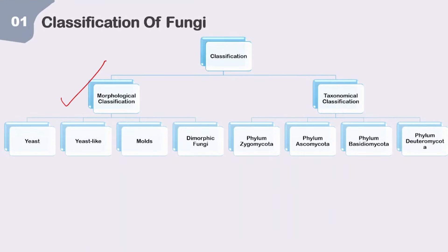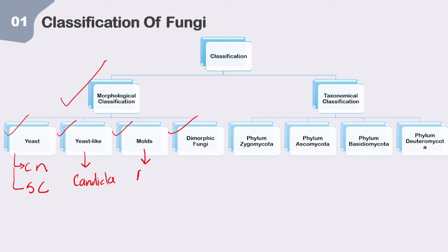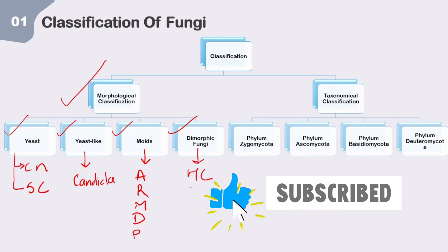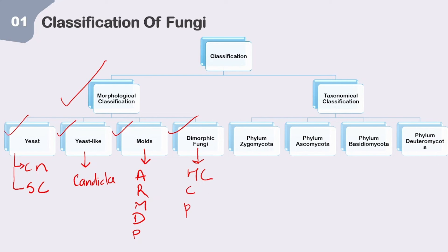Examples of dimorphic fungi include Histoplasma capsulatum, Blastomyces dermatitidis, Coccidioides immitis, Paracoccidioides brasiliensis, Penicillium marneffei, and Sporothrix schenckii. Quick recap of morphological classification: Yeast — Cryptococcus neoformans and Saccharomyces cerevisiae; Yeast-like — Candida; Molds — ARMDP (Aspergillus, Rhizopus, Mucor, Dermatophytes, Penicillium); Dimorphic — Histoplasma, Coccidioides, Paracoccidioides, etc.